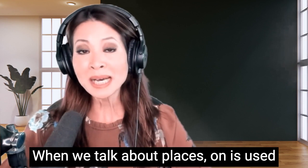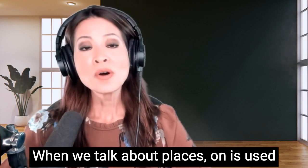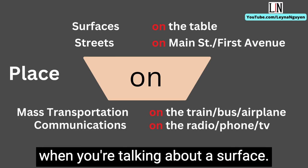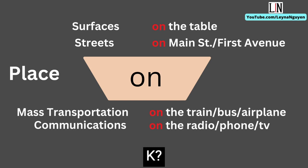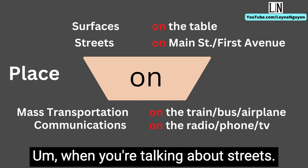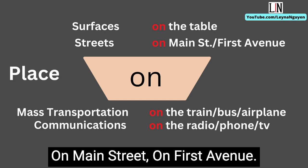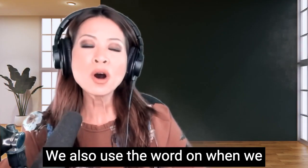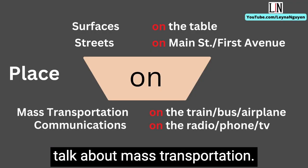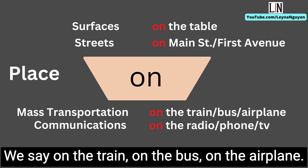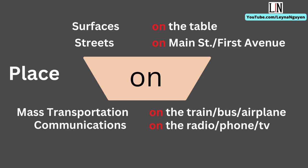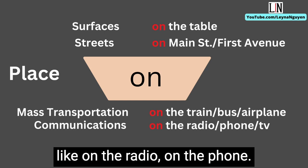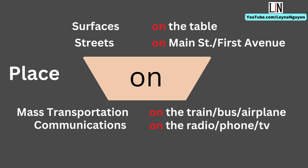When we talk about places, on is used when talking about a surface — on the table. When talking about streets: on Main Street, on First Avenue. We also use on for mass transportation: on the train, on the bus, on the airplane. And also for communications — on the radio, on the phone, on TV.